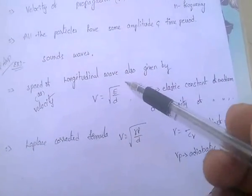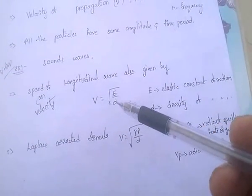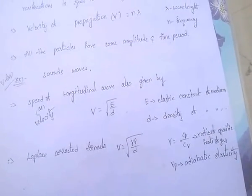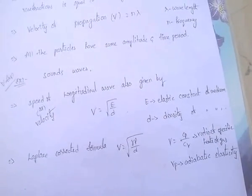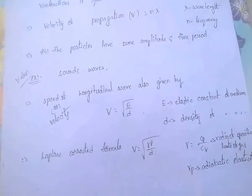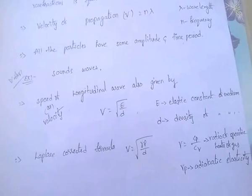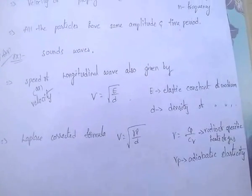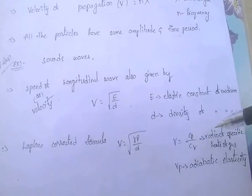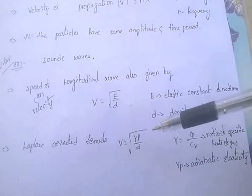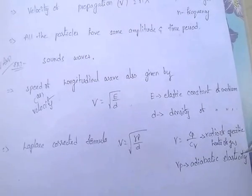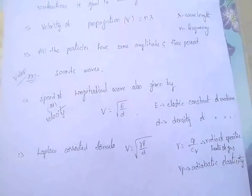The Laplace corrected formula for the speed of sound is v = √(γP/d), where gamma (γ) is cp/cv, the ratio of specific heats of gases, and γP is the adiabatic elasticity.